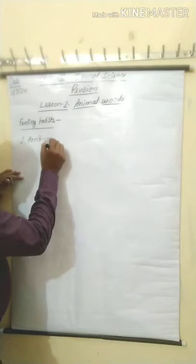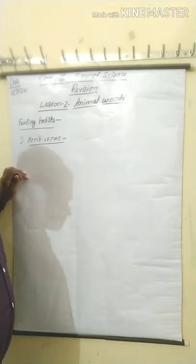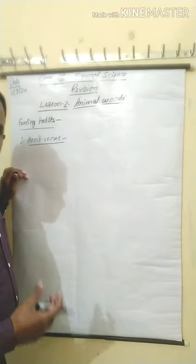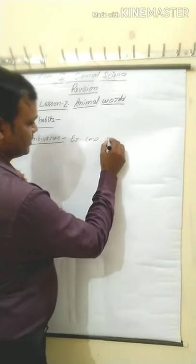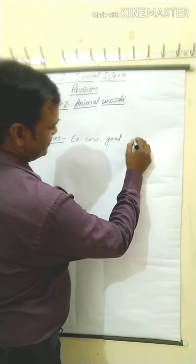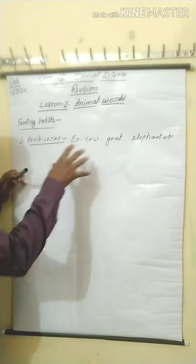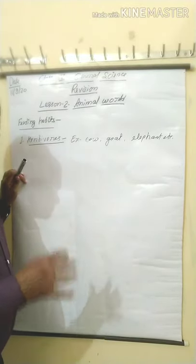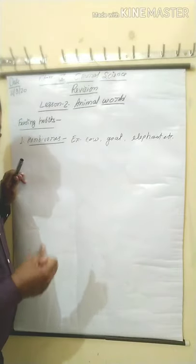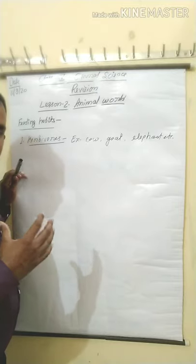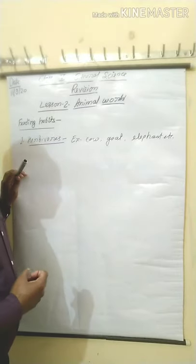First: Herbivorous animals. What do you mean by herbivorous animals? Animals that eat plants, leaves, or parts of plants are called herbivorous animals. Examples: cow, goat, elephant, etc. When we observe their mouth parts, the incisors — their front teeth — are broad. With the help of incisors, they cut the leaves and grass. And their molars and premolars are broad, and with the help of broad molars and premolars, they grind the food into fine particles.